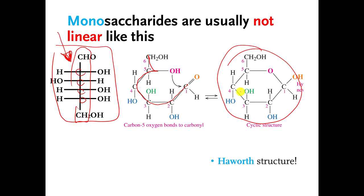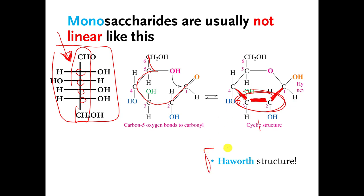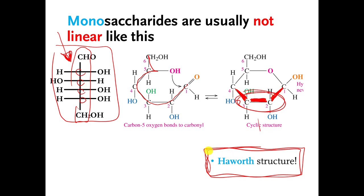Sometimes you will see monosaccharides drawn with the bottom bonds thickened in a solid way — we've already talked about this a little bit. That means that the bottom part of the molecule, especially these two carbons, are supposed to be pointing toward you in 3D. If you ever see those thickened bonds, that's called a Haworth structure. I don't really care that you know that name, but I do care that you know what those thickened bonds are supposed to be showing you.